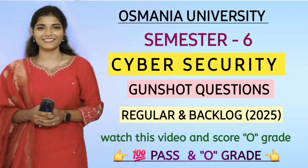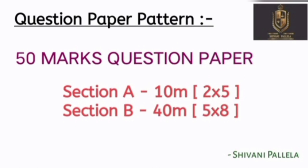Coming to the question paper pattern: total 50 marks. This subject is only for BCA (Bachelor of Computer Application) students. In Section A, five questions need to be attempted, each carrying two marks — total 10 marks. In Section B, five questions need to be attempted, each carrying eight marks — total 40 marks.